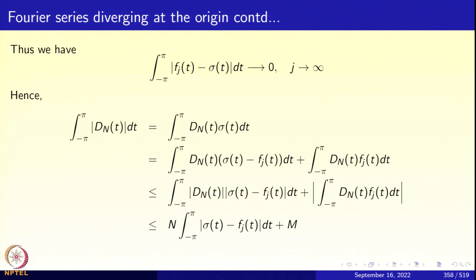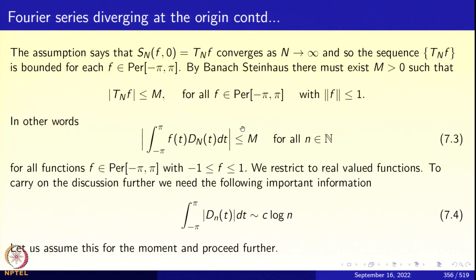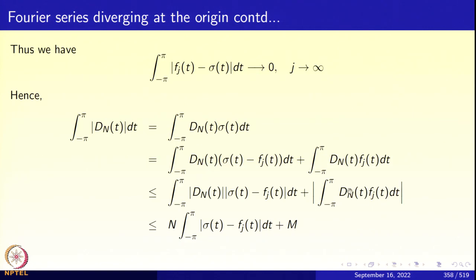We work with these continuous approximations. We have the integral from −π to π of |fⱼ(t) − signum(t)| dt → 0 as j → ∞. The integral from −π to π of |Dₙ(t)| dt equals the integral of Dₙ(t) times the signum function. Adding and subtracting fⱼ and applying the triangle inequality, this is bounded by the integral of |Dₙ(t)|·|signum(t) − fⱼ(t)| dt plus the modulus of the integral of Dₙ(t)·fⱼ(t) dt. Since fⱼ is continuous, estimate 7.3 applies, giving the second piece bounded by M.